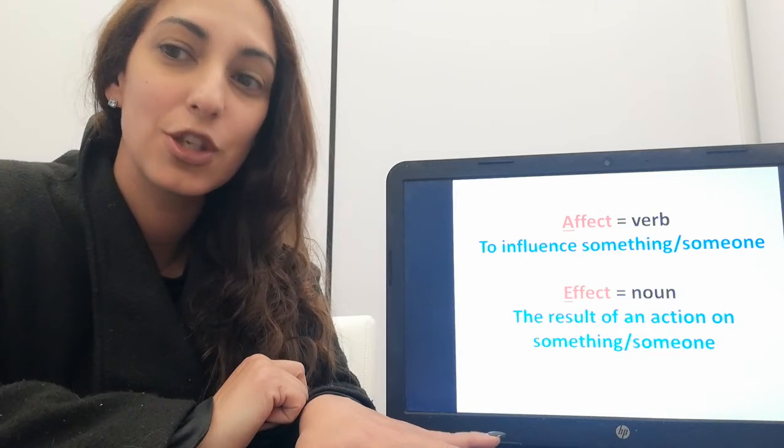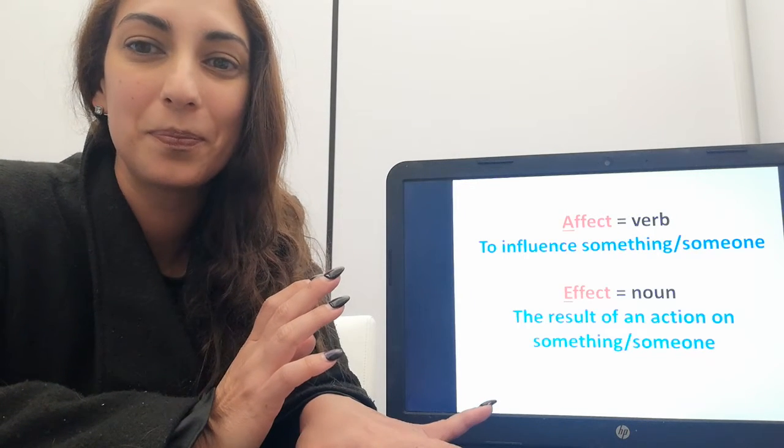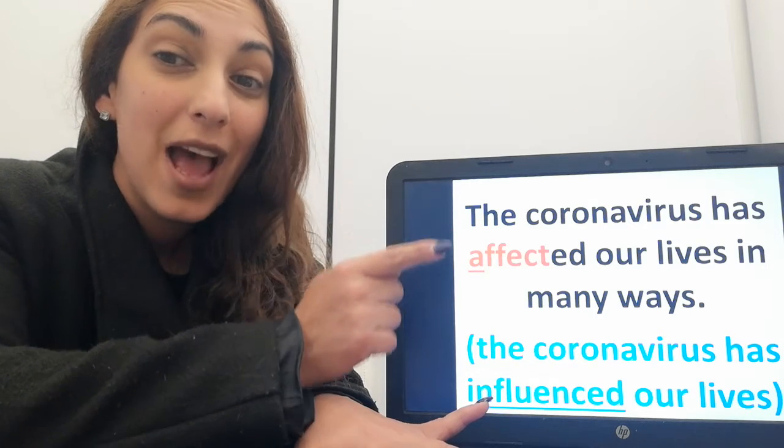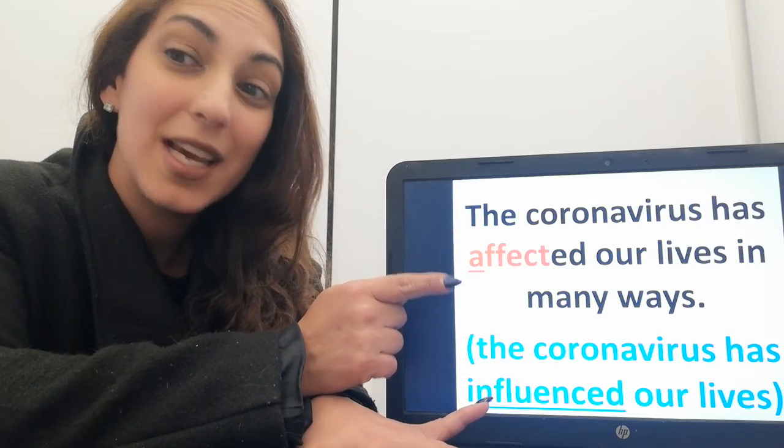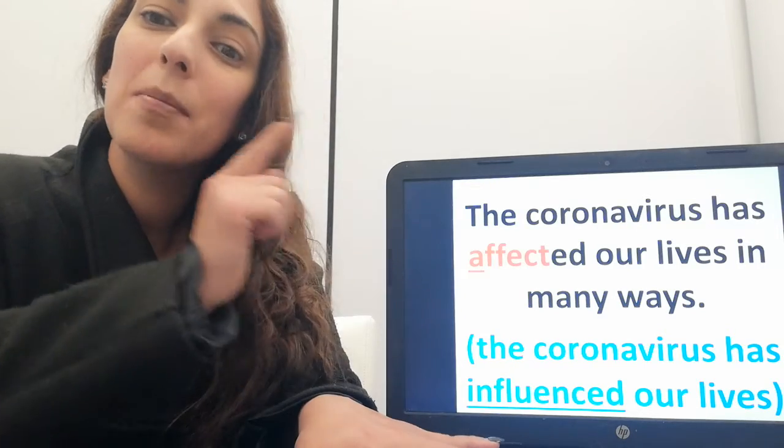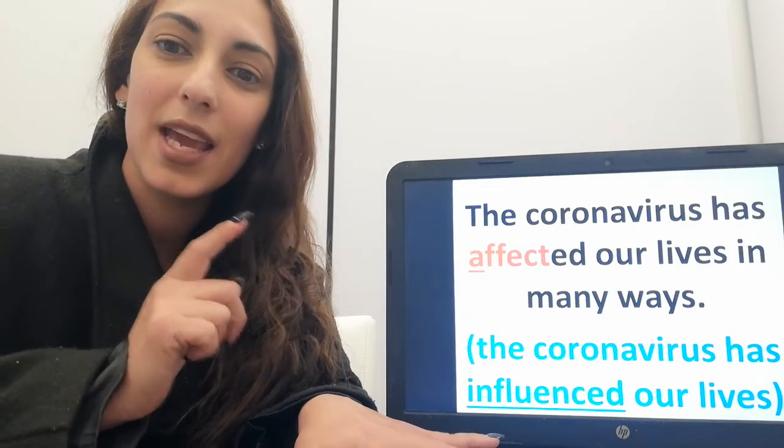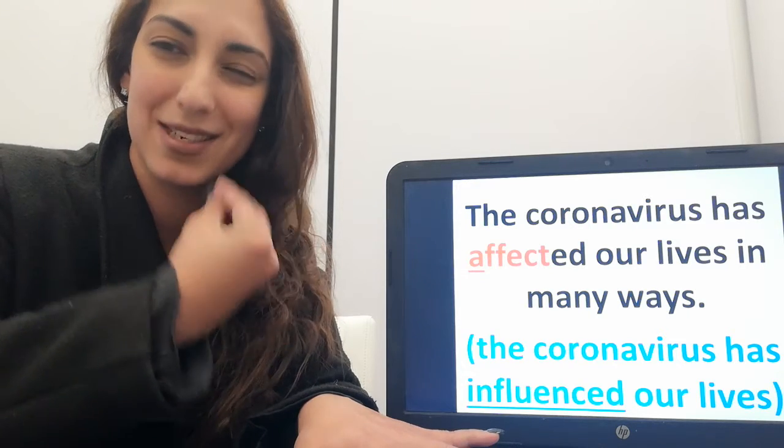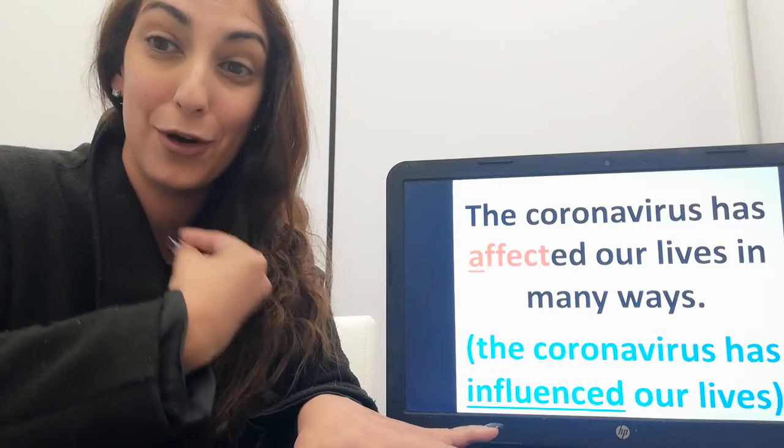Now let's try and put these in a sentence so we can see what they mean. The coronavirus has affected our lives in many ways. Now what am I saying here? I'm saying that the coronavirus has influenced our lives. So the coronavirus has done something to our lives, like a verb.